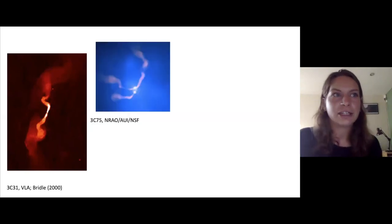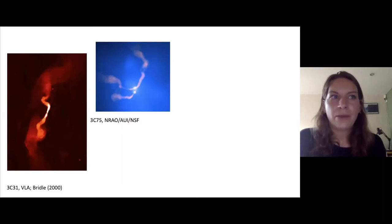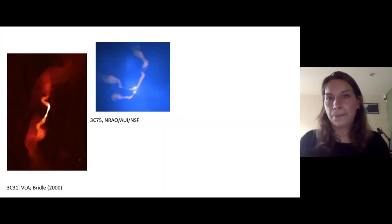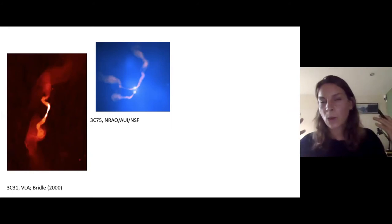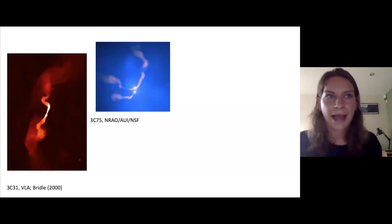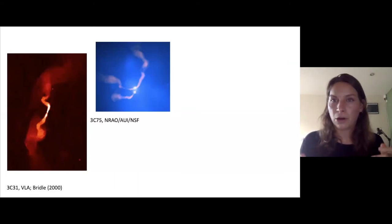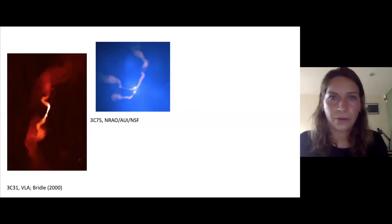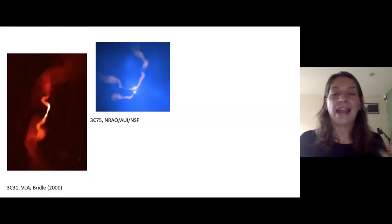My next example is 3C75, an interesting example with two supermassive black holes — the really bright spots near the lower half of the image. The swept-back appearance of these jets is produced by the rapid motion of the galaxies moving through gas within a big cluster of galaxies — similar to how your hair might get swept back on a roller coaster. These galaxies are moving so fast through their cluster that their jets are being swept back by the environment. And towards the top of the image, the two jets from the two black holes are actually interacting with each other.